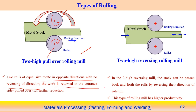The work has to be passed to this side for further reduction because the two rolls are rotating in opposite directions. Now there is the two-high reversing rolling mill. In this case, the stock can be passed back and forth through the rolls by reversing their direction of rotation. This type of rolling mill has higher productivity — the rollers can be moved to and fro in both directions to reduce the thickness.